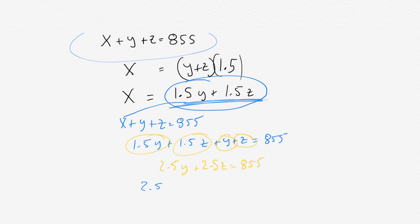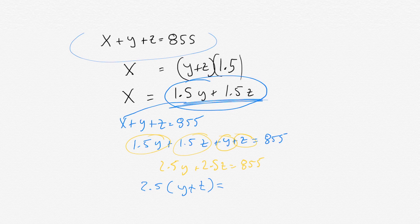So if you do that, Y plus Z equals 2.5... And then what the heck is this? You'd have to, if you divide 855 by 2.5, let's do it the old fashioned way, the long division.